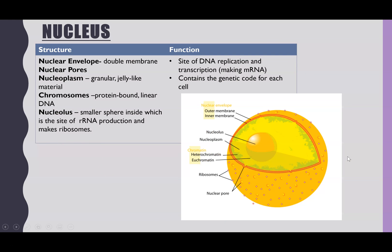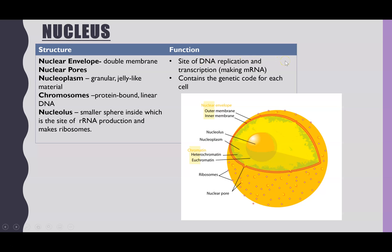Now we'll go through each of those 10 organelles one at a time. For the nucleus, zooming in we can see the nuclear envelope as the outer layer, with pores within it that allow mRNA to come out of the nucleus. Nucleoplasm is the granular jelly-like substance inside. Inside the nucleus there are chromosomes, which are protein-bound with histones. The small sphere in the middle is the nucleolus, where rRNA and ribosomes are produced. The overall function of the nucleus is as the site of DNA replication and transcription — where mRNA is created — and it contains all of the genetic code for every single cell.